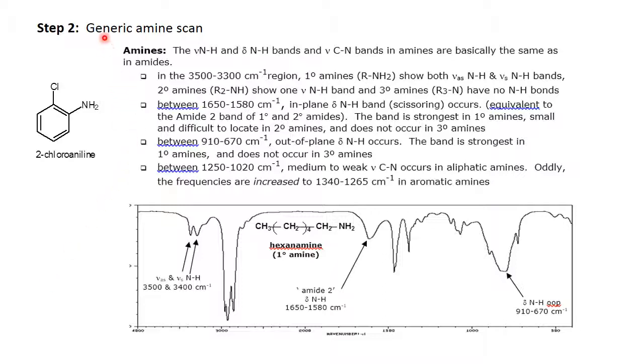Step two, let's examine a generic amine scan. So here I have the scan of hexane amine. It is a primary amine with two hydrogens bonded to the nitrogen and one alkyl group. Now for primary amines, they will have two NH stretches somewhere in the region of 3500 to 3300 wavenumbers, one for the asymmetric NH stretch and another one for the symmetric NH stretch.